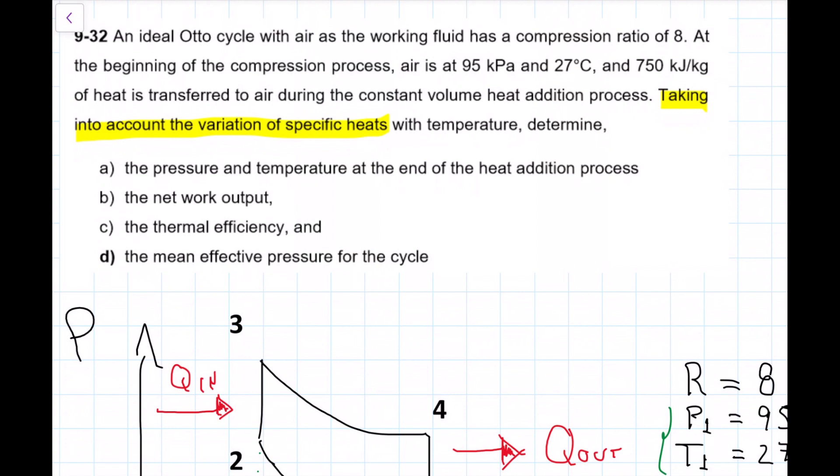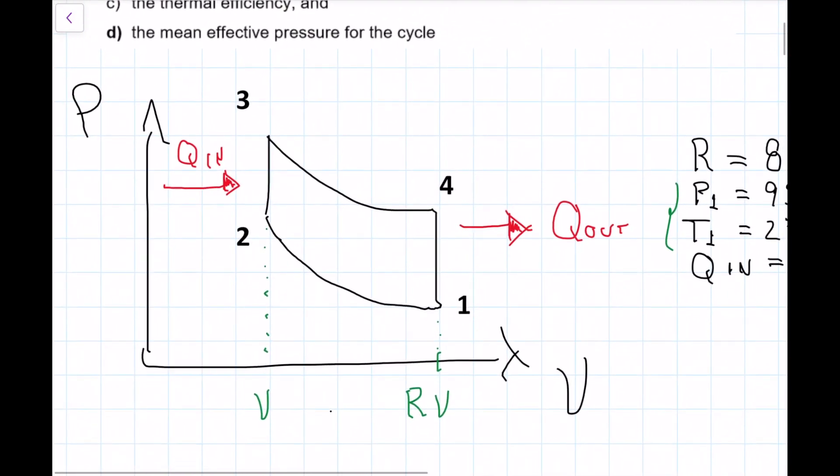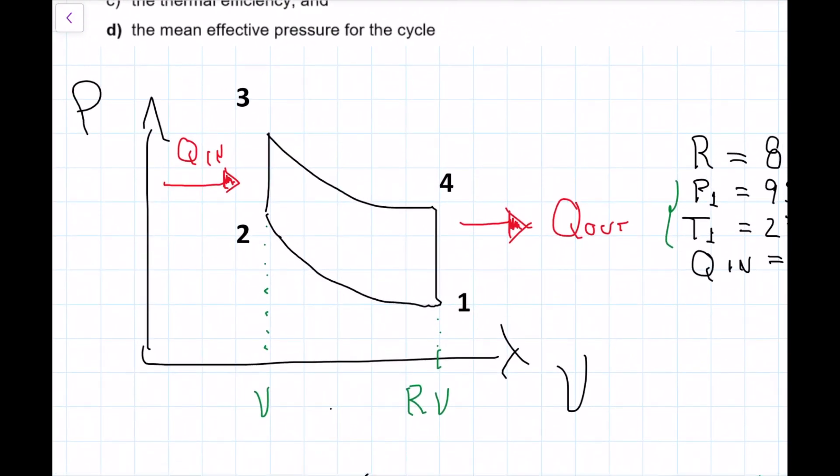So what do we need to know to be able to solve this? Well, first of all we need to know what an Otto cycle is. An Otto cycle is one that has, just like the one that I drew here on the bottom, two isentropic processes and two isovolumetric ones. So let's actually draw this here.